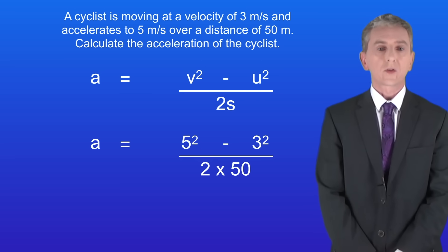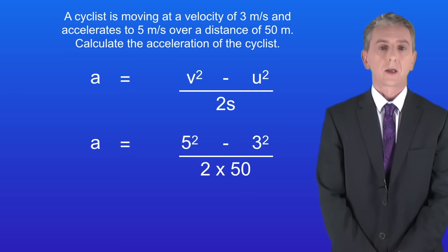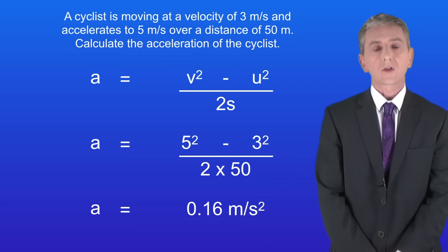Ok so the initial velocity is 3 metres per second and the final velocity is 5 metres per second. The distance travelled is 50 metres. Putting these into the equation gives us an acceleration of 0.16 metres per second squared.